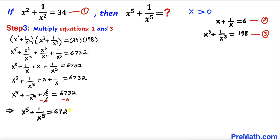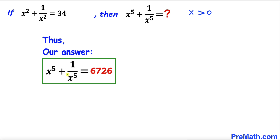Thus the value of x⁵ + 1/x⁵ turns out to be 6726, and that's our final answer. Thanks for watching, and please don't forget to subscribe to my channel for more exciting videos. Bye!